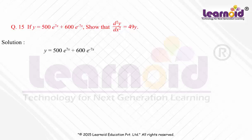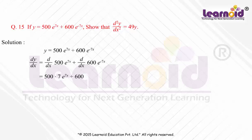First, let us find dy by dx by differentiating with respect to x. It is equal to 500 into 7 e to the power 7x plus 600 into minus 7 e to the power minus 7x, or 3500 e to the power 7x minus 4200 e to the power minus 7x.